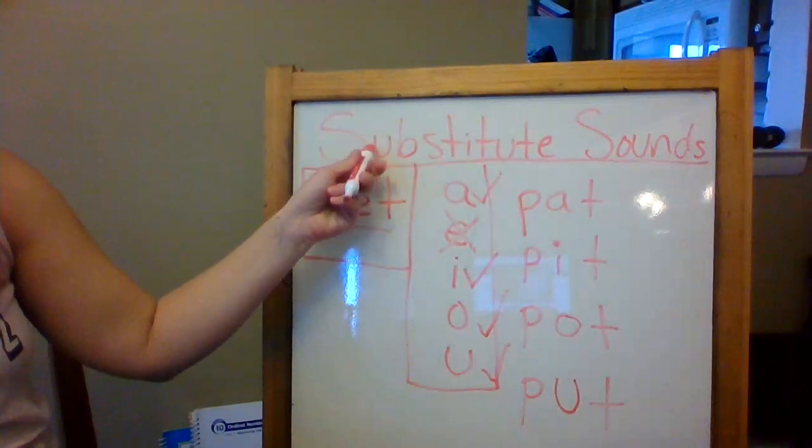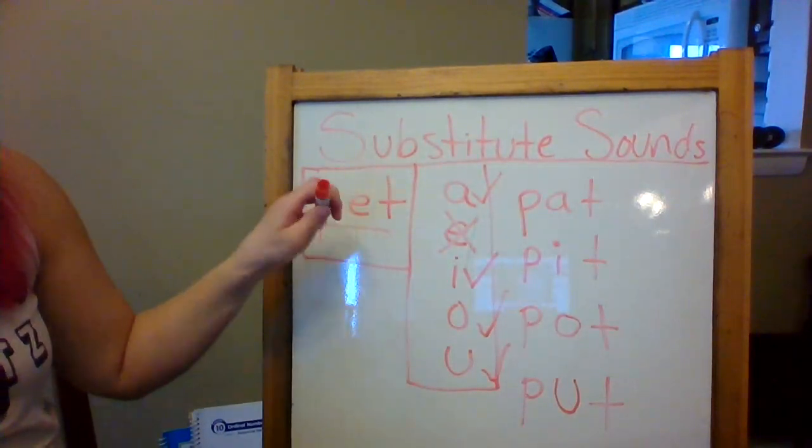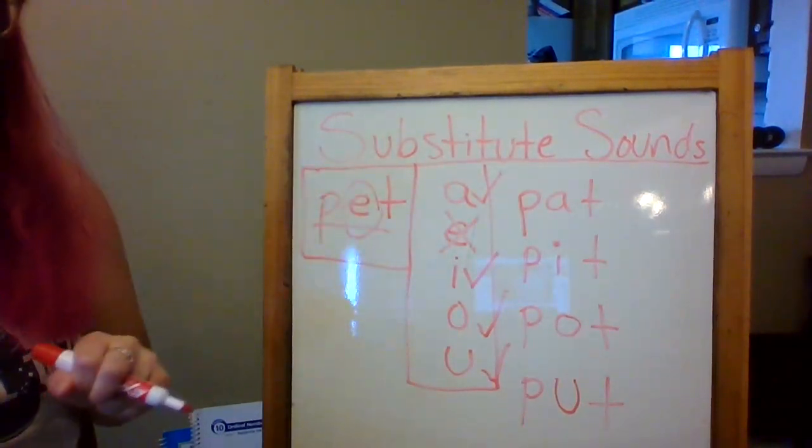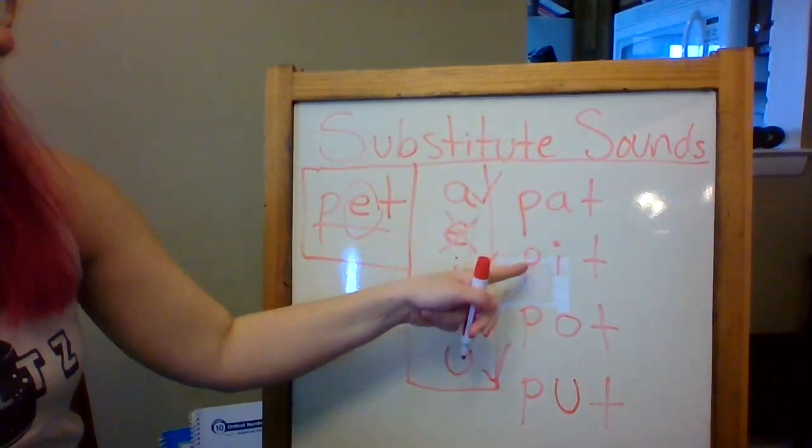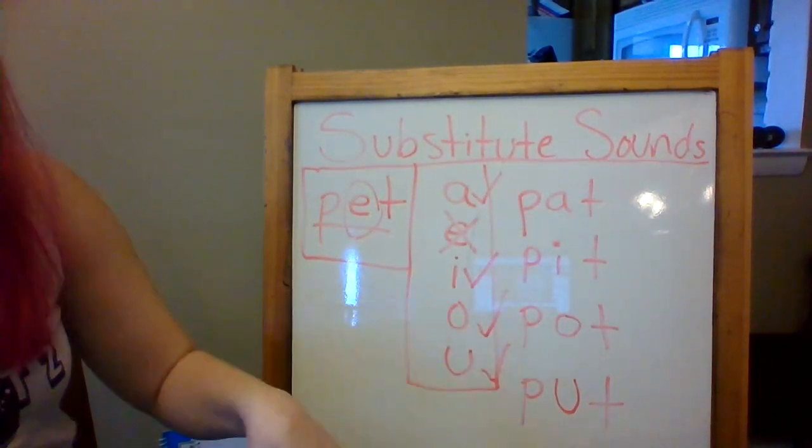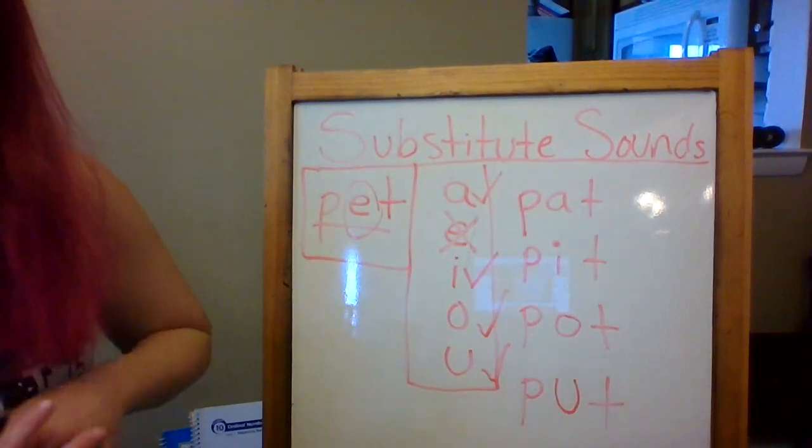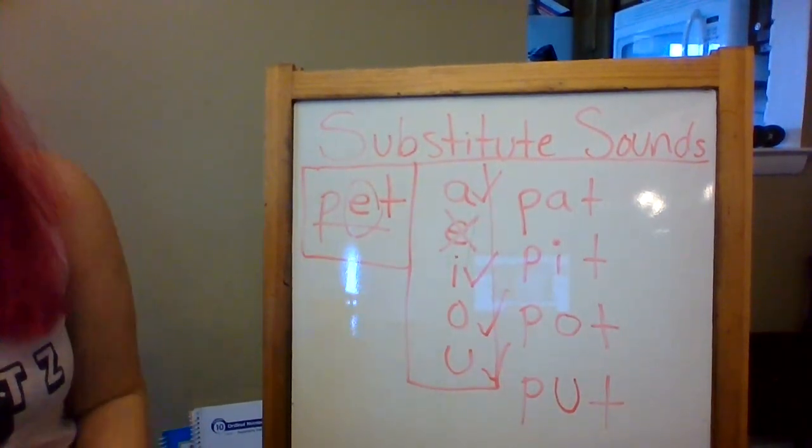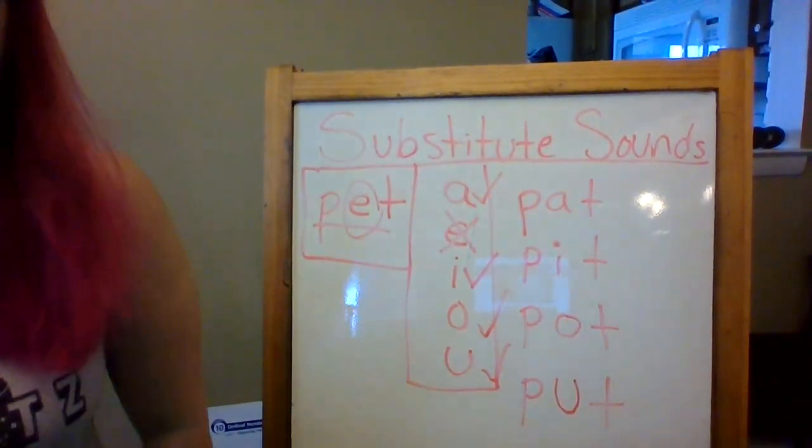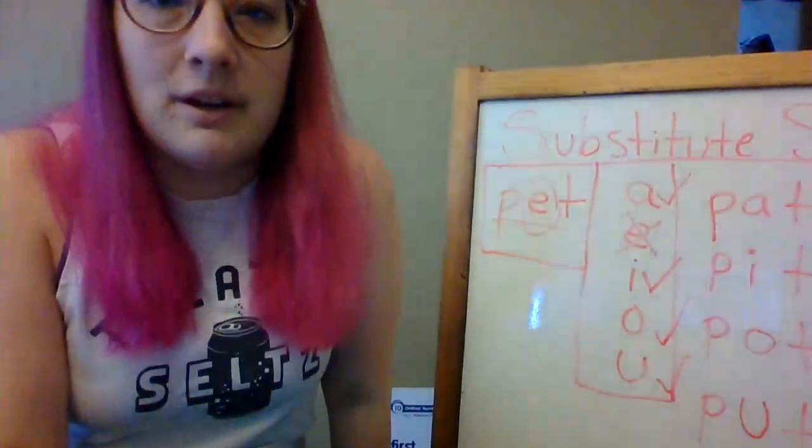So as you can see, when we substitute the different vowel sounds into the middle for E in the word pet, we get pat, pit, pot, put. They all sound kind of the same, but they're all very different words, right? That's why it's important that we know our vowel sounds. We want to make sure we're writing the right words in our writing, and that we're reading the right words in our reading. So you guys are gonna practice this a little bit today during your lesson, but good job,